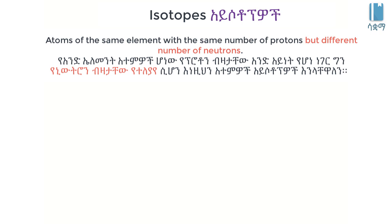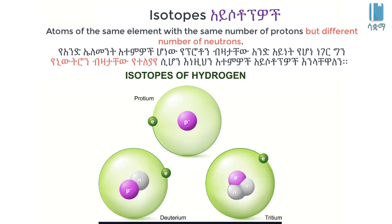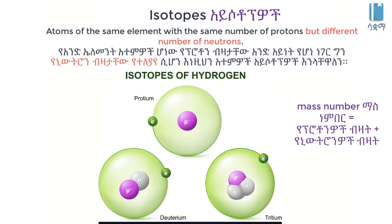Hello everyone, welcome to isotopes. Isotopes are atoms of an element. If we look at proton numbers, the proton number is key. The influence of hydrogen is the solution.